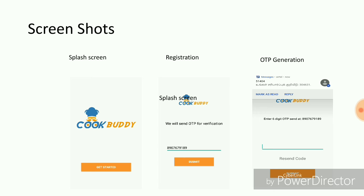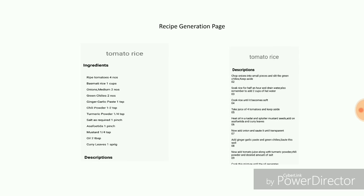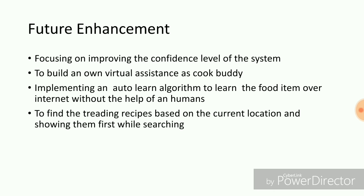After authentication, the home page appears with an open camera icon. The user clicks it to capture images, the app tells the name of the item, and shows the corresponding recipe. The recipe is displayed on the recipe identification page. The screenshots show the registration page, OTP generation page, and the home screen with the open camera button, which enters camera mode, detects the food, and shows the recipe for that particular item.